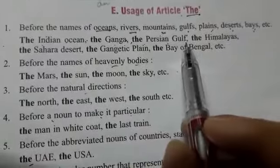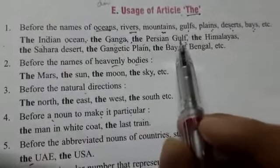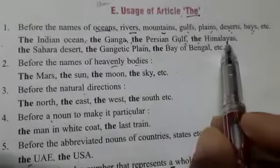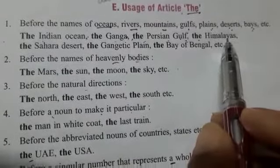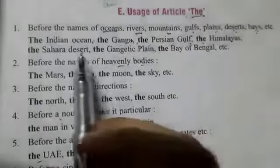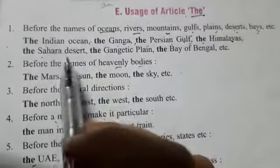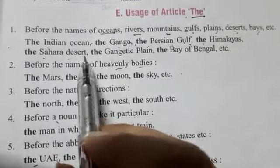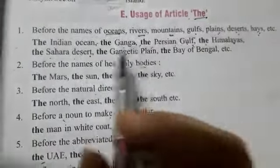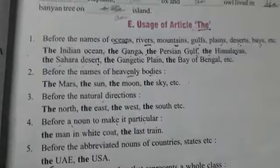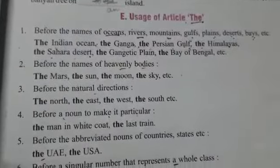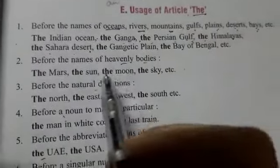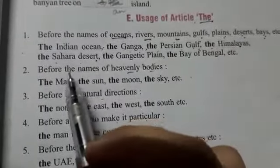The Persian Gulf, the Himalayas — mountains. The Sahara Desert. Toh inke names ke saath hum the use kerthi hai — before them.